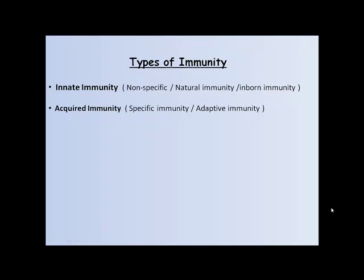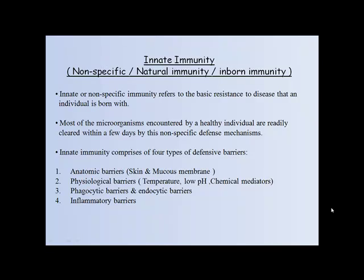There are two main types of immunity: innate immunity and acquired immunity. Innate immunity is also called nonspecific, natural, and inborn immunity. Innate immunity or nonspecific immunity refers to the basic resistance to disease that an individual is born with. Most microorganisms encountered by a healthy individual are readily cleared within a few days by these nonspecific defense mechanisms.